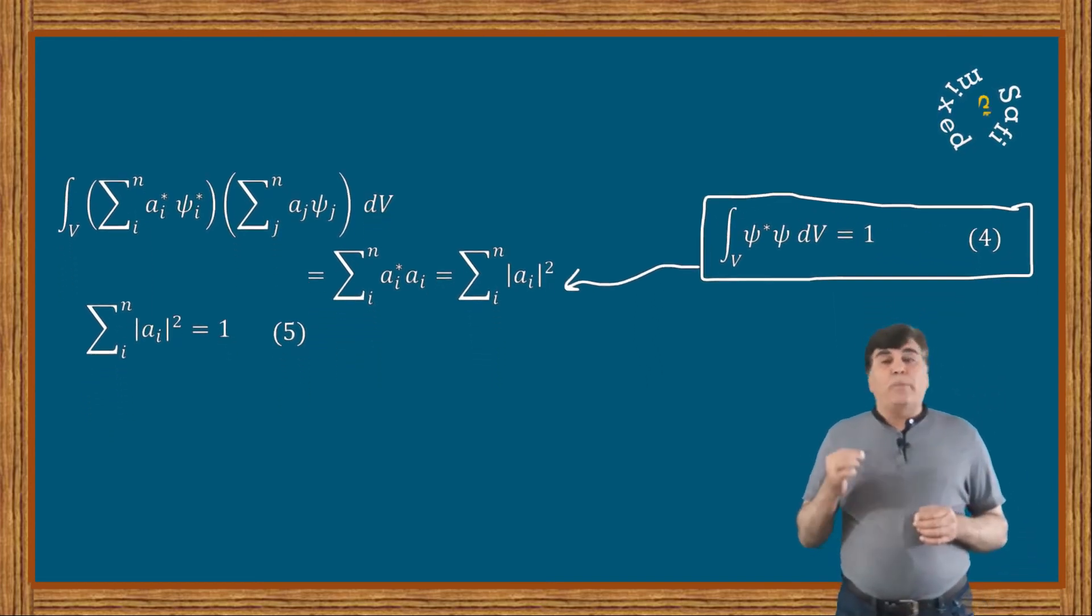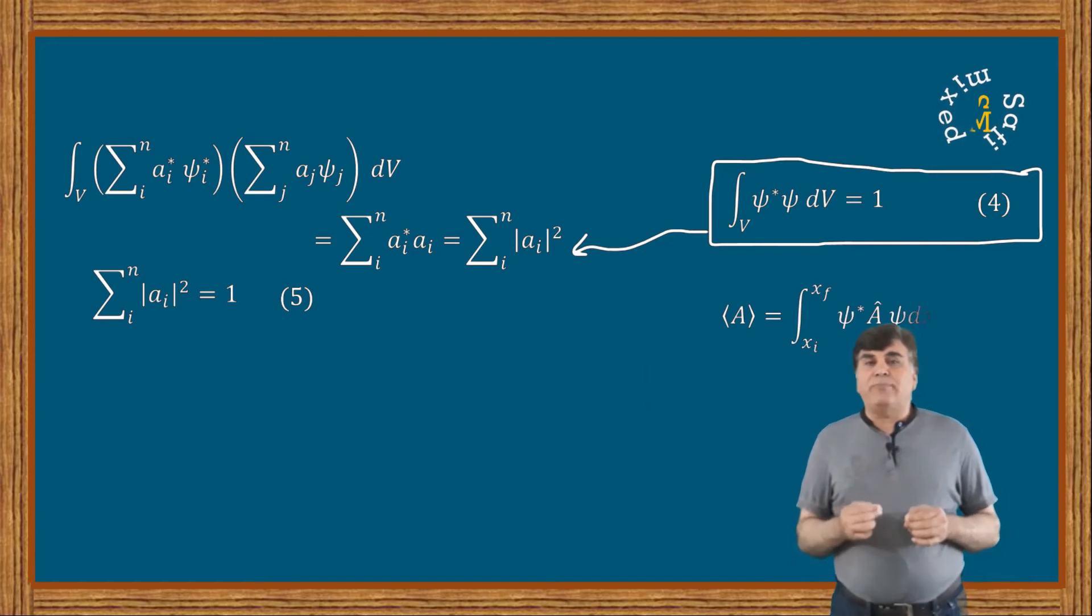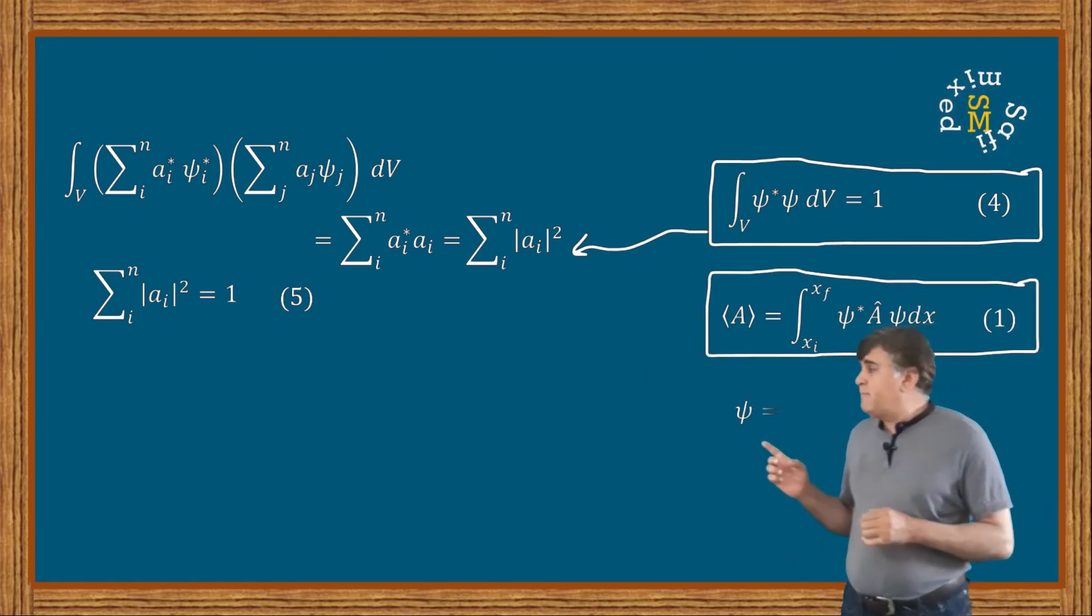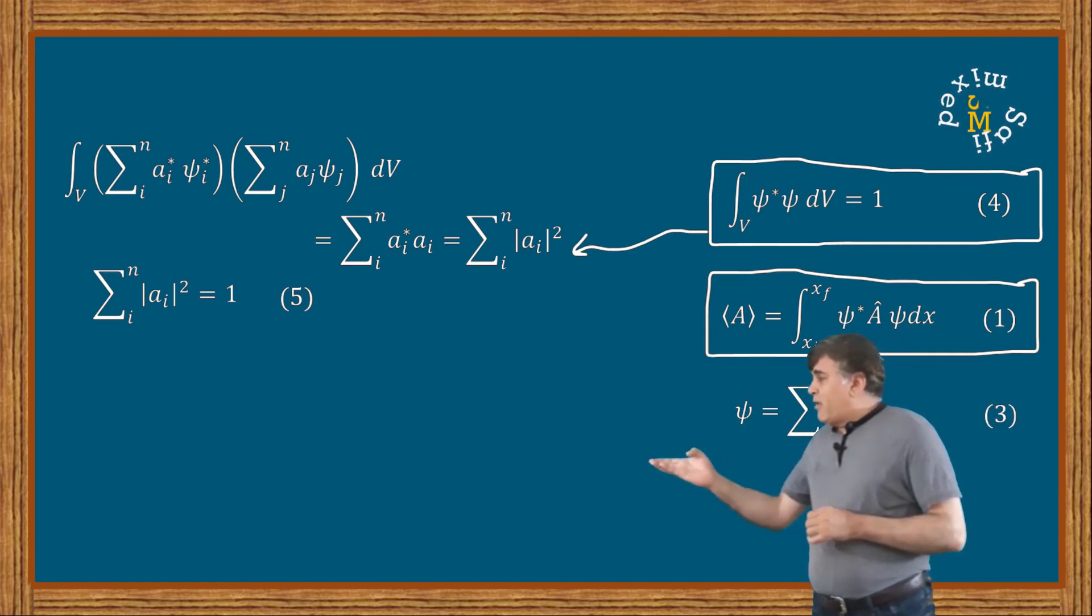Now let's go back to equation 1. By substituting the value from equation 3, we can write the expectation value in the form of this equation where again I have used different indices for the two summations inside the integrand on the right side.